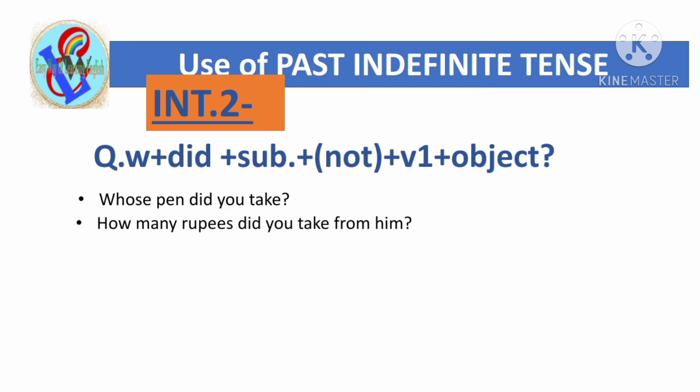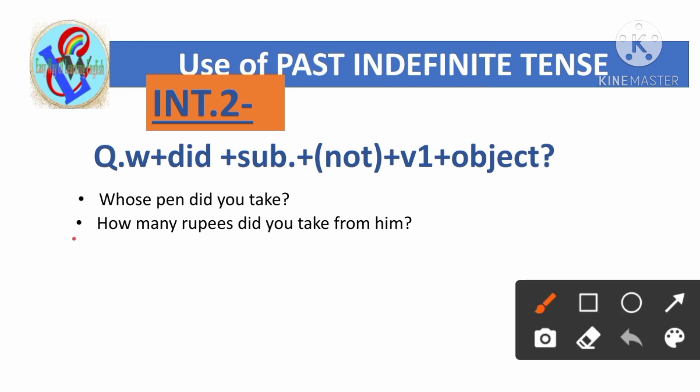'How many rupees did you take from him?' Here 'how many' is the question word, 'rupees' is the noun — so 'how many rupees' are read together. Because it's a past indefinite tense sentence, 'did' is used as the helping verb. The subject is 'you', and the main verb is 'take'.